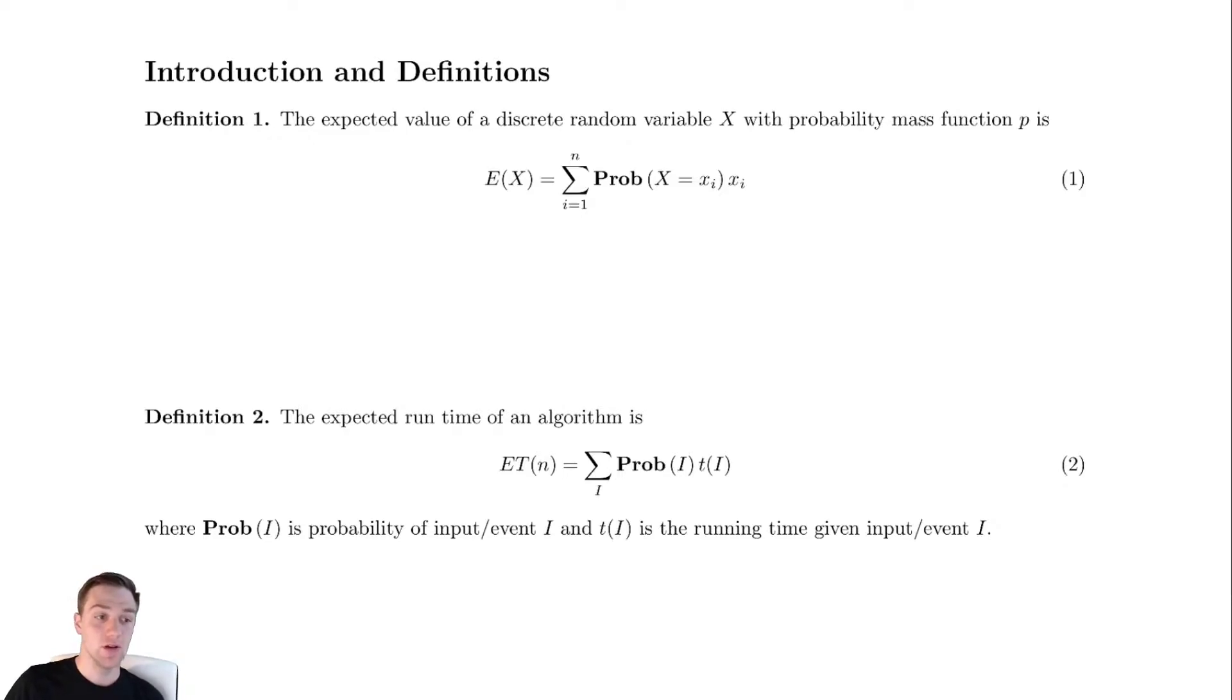So the first one is our formal definition of expected value that you may have seen in your statistics class. This is that if you have a random variable X, you can compute the expected value by summing up the probability of each of the possible values multiplied by the value.